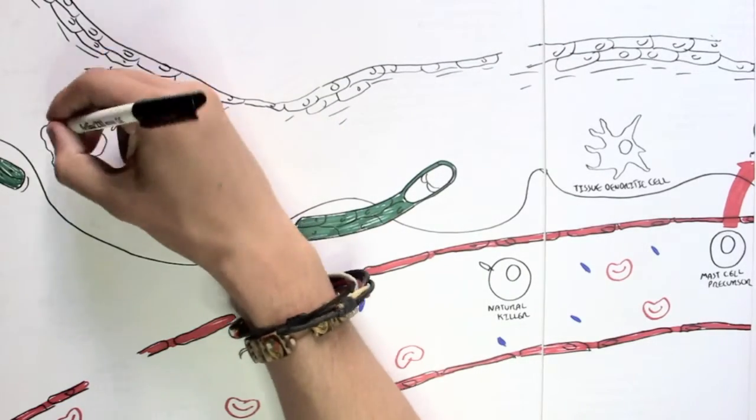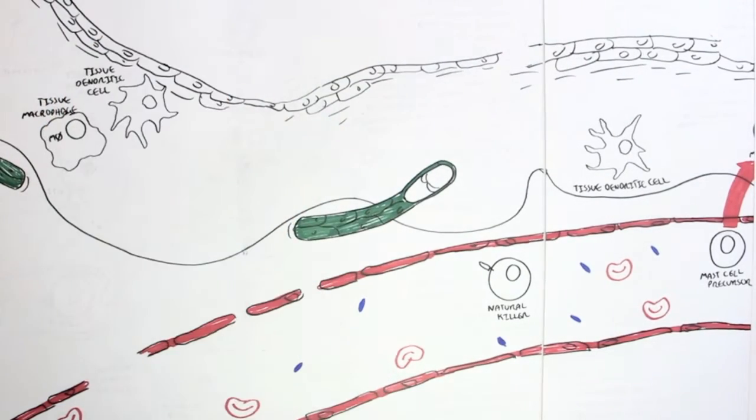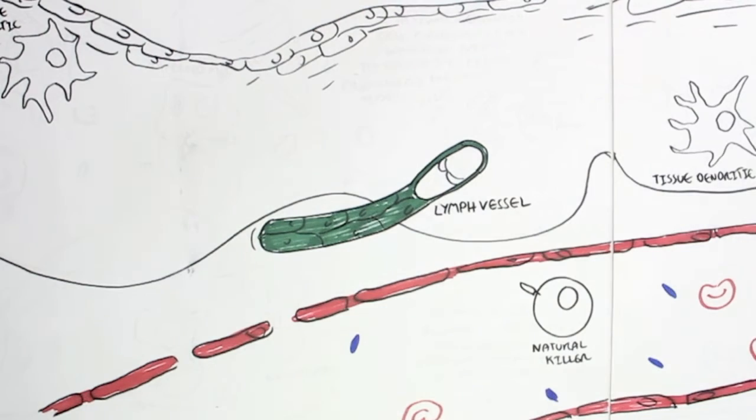And also, we have this green-looking thing. This is the lymphatic vessel, or the lymph vessel, which is part of the lymphatic system.